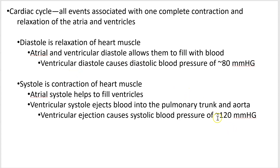When you get your blood pressure reading of 120 over 80, you have 120 when the heart's contracted — when the ventricles are contracted in the systemic arteries — and 80 millimeters of mercury when they're relaxed.